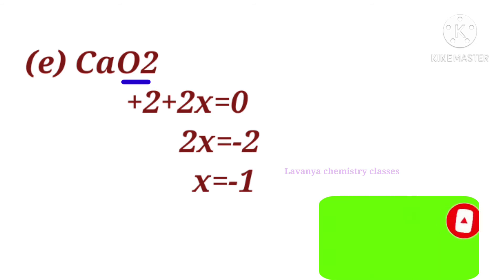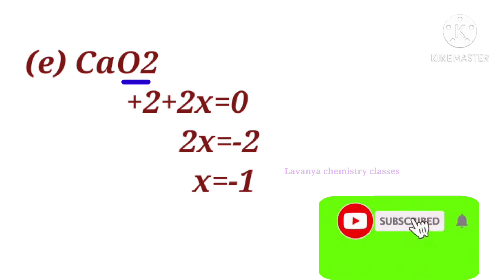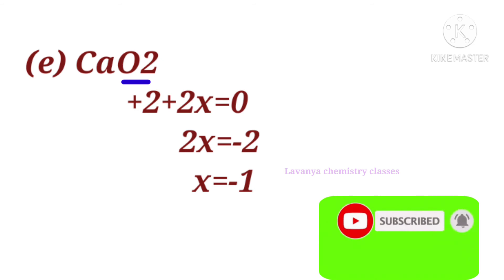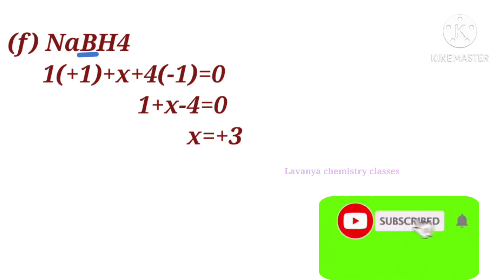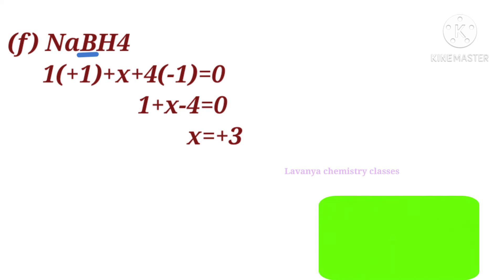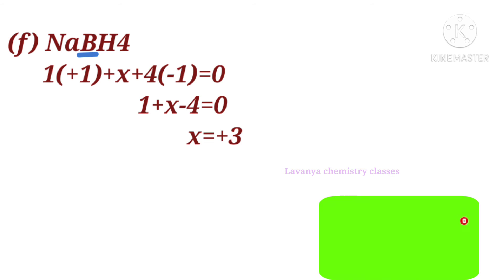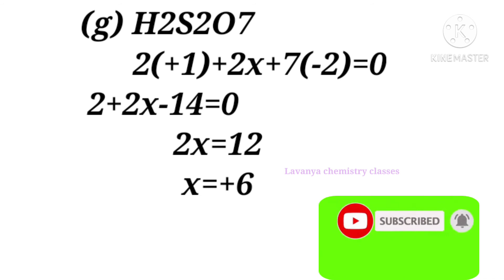The next problem is CaO₂ (calcium peroxide). Calcium has a +2 oxidation state. We find oxygen: +2 + 2x = 0, so x = −1. This means CaO₂ has a peroxy linkage. The next problem is NaBH₄. Let boron be x: (+1) + x + 4×(−1) = 0, giving x = +3, so boron's oxidation number is −3.